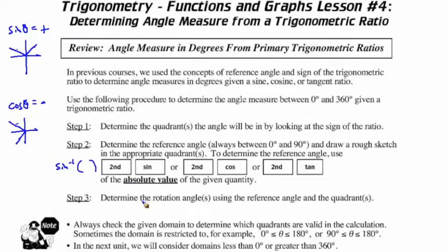In step three, we determine the rotation angles using the reference angle and the quadrants that we found. We should always check the given domain to determine which quadrants are valid in the calculation. Sometimes the domain is restricted, and we'll have to watch for that.